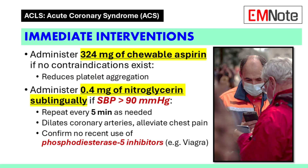Once the initial assessment is complete, immediate interventions are necessary to stabilize the patient. Administer 324 mg of chewable aspirin unless there are contraindications such as allergies or active gastrointestinal bleeding. Aspirin works by inhibiting platelet aggregation, which reduces the formation of blood clots.